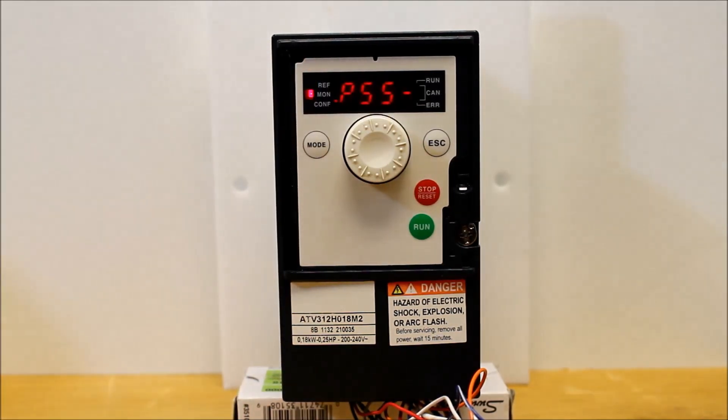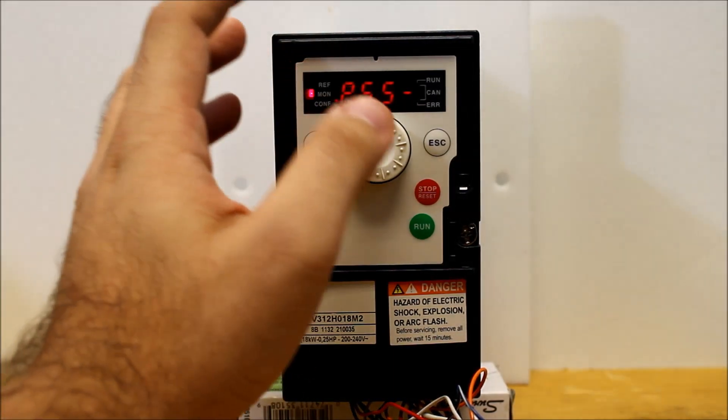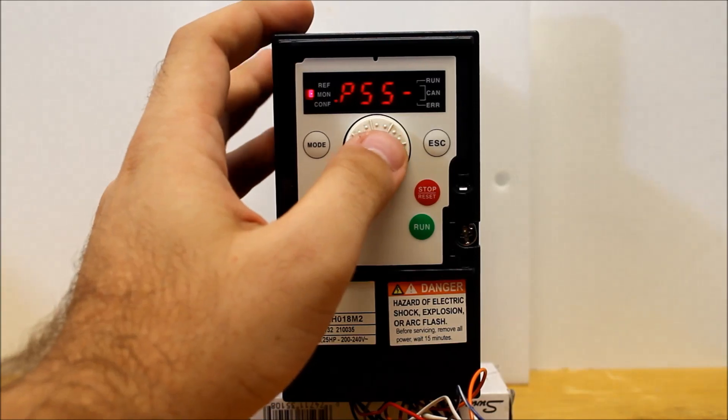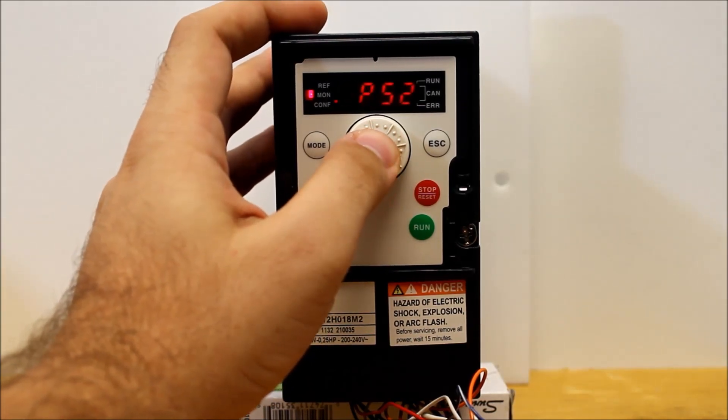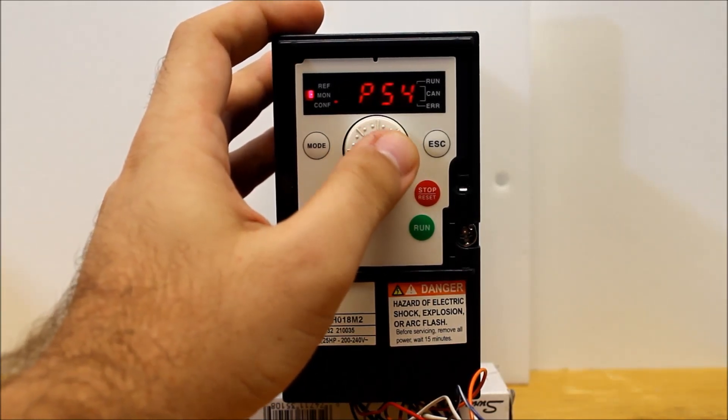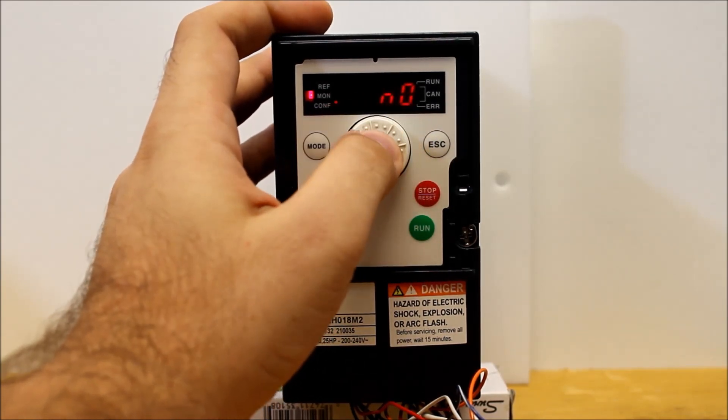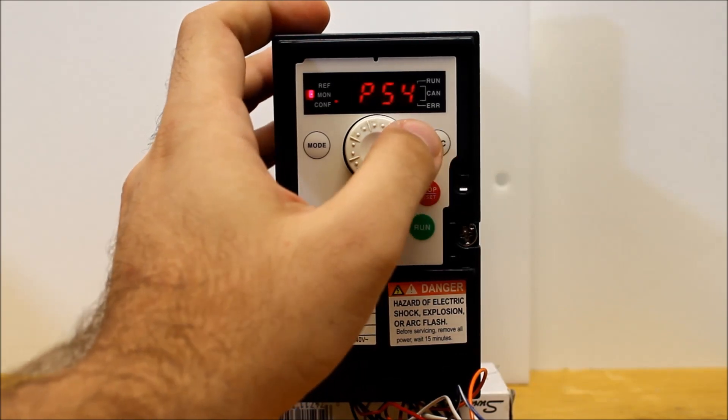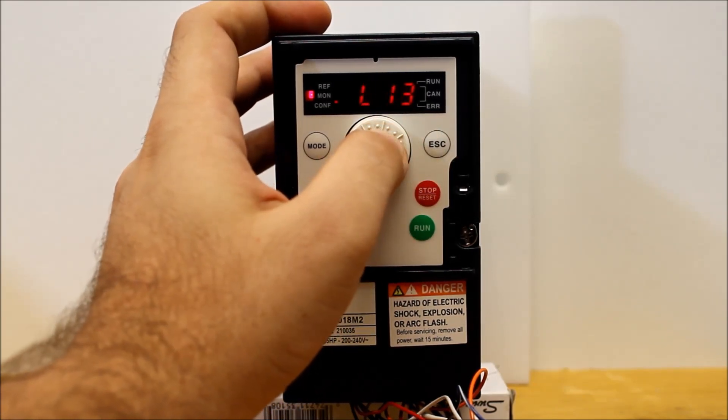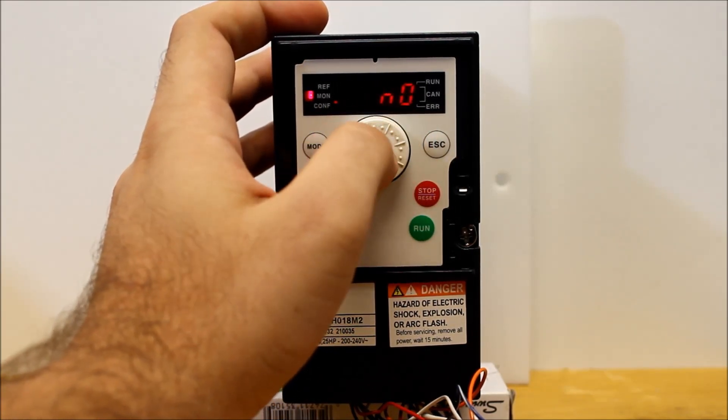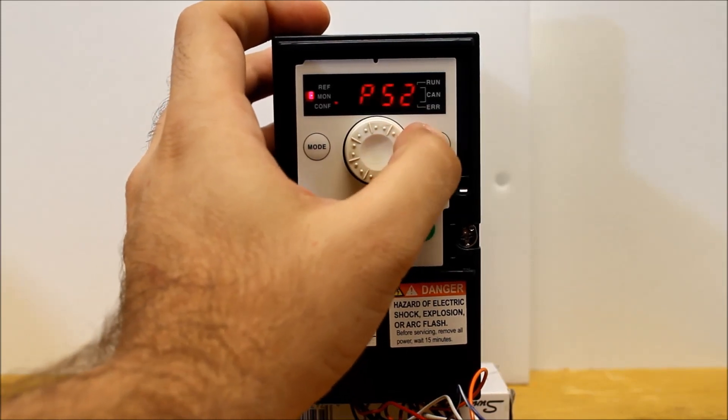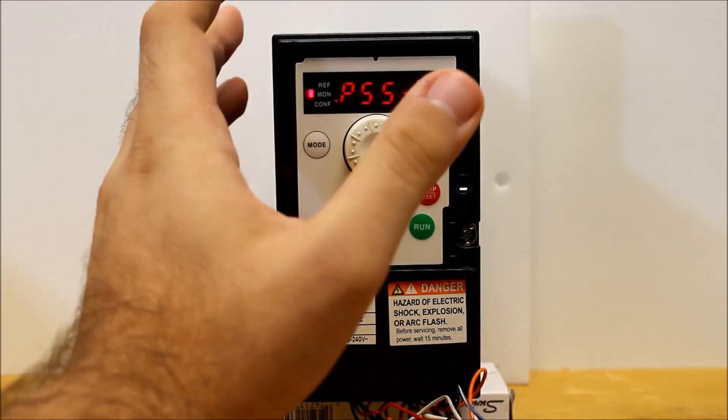Now, you need to disable the preset speeds. Escape back to SA1 dash, and then scroll down to P55 dash. Go down to P54 first, enter, set that to no, disable it, escape. Go up to PS2, enter, set that to no, enter, and then escape, and then escape again. Those are basically disabled now. You have no presets and no summing now that you've done that.